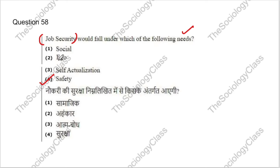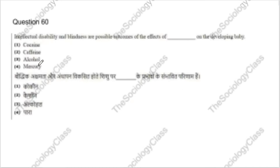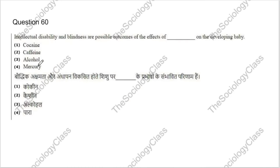Question 59: Social Justice Day — when is it celebrated? Options: 18th April, 1st December, 17th July, or 20th February. I have provided a list for important days on Telegram. The correct answer is D — 20th February.